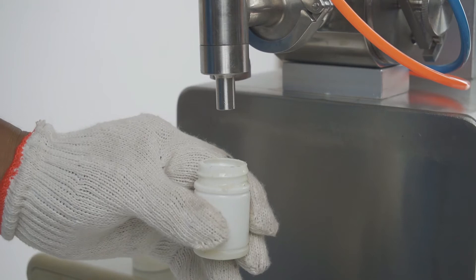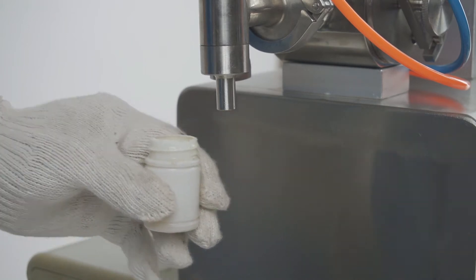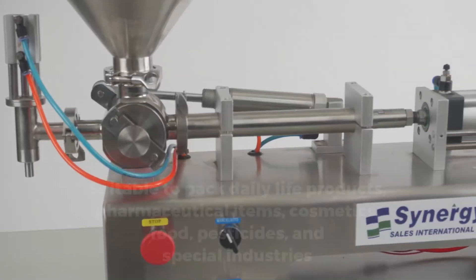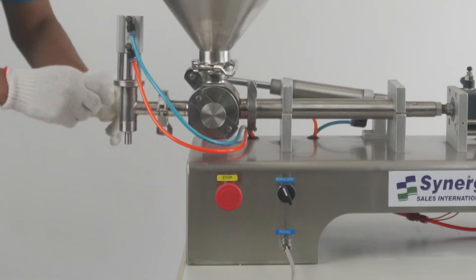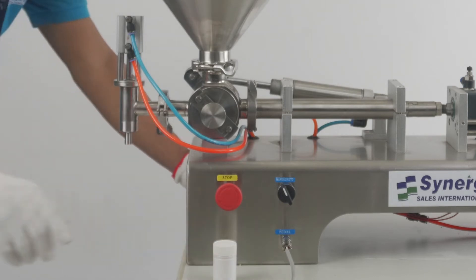This machine is mainly used for light liquids and materials with high viscosity such as honey. It is suitable to pack daily life products, pharmaceutical items, cosmetics, food, pesticides, and products from special industries.